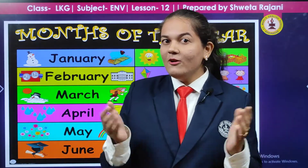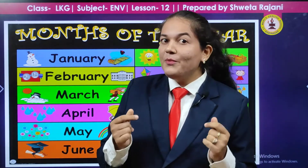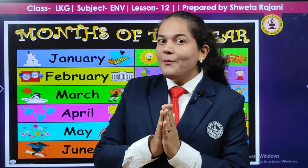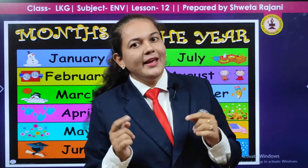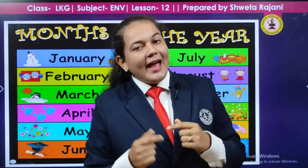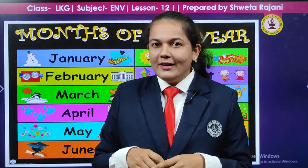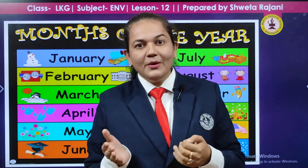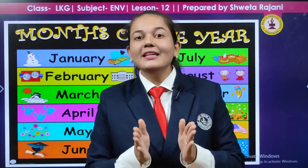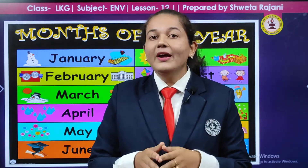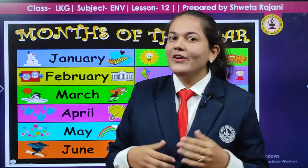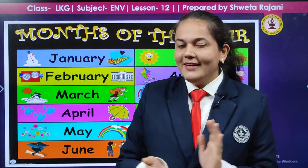January, February, March, April, May, June, July and August, September, October, November and December. These are the 12 months of the year.